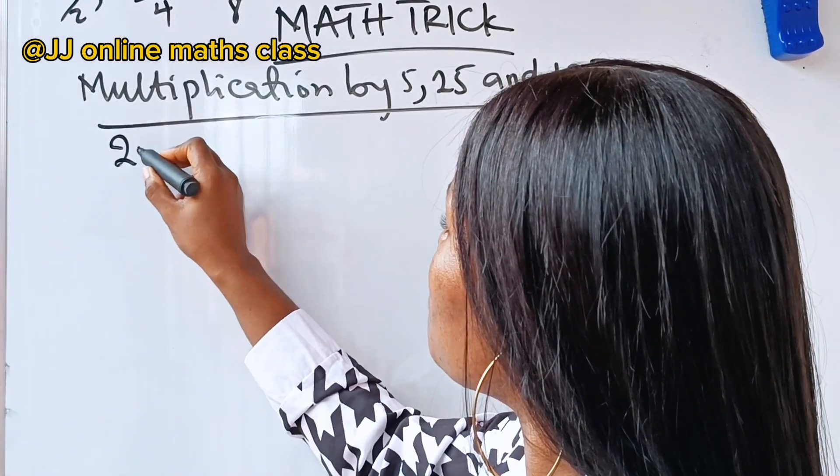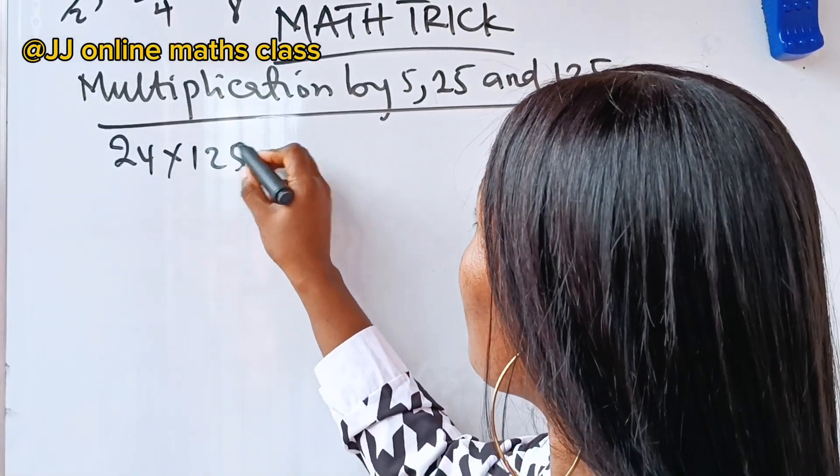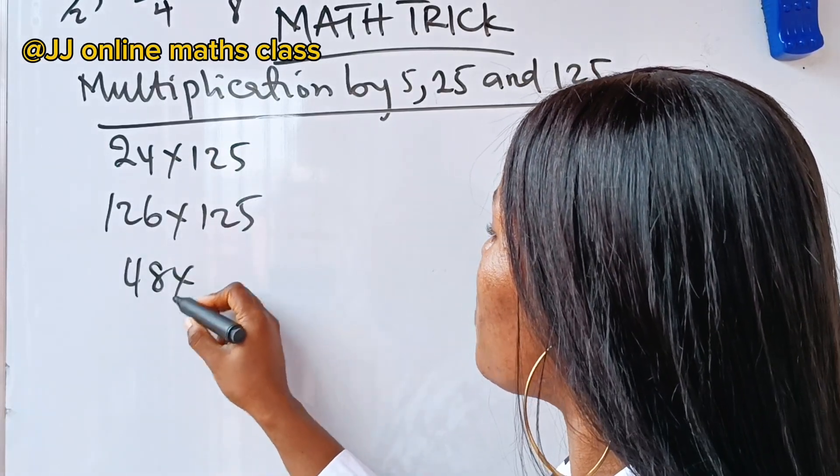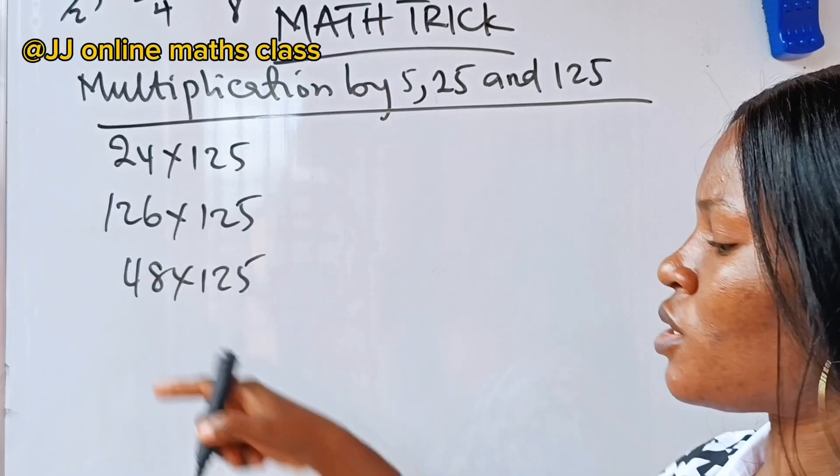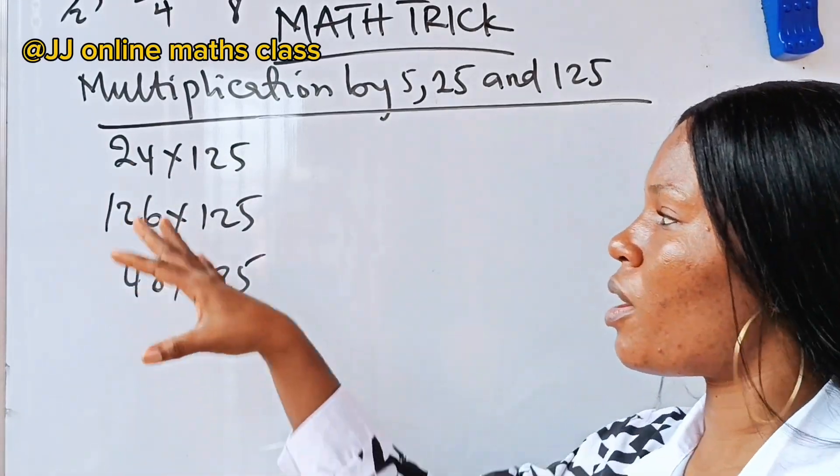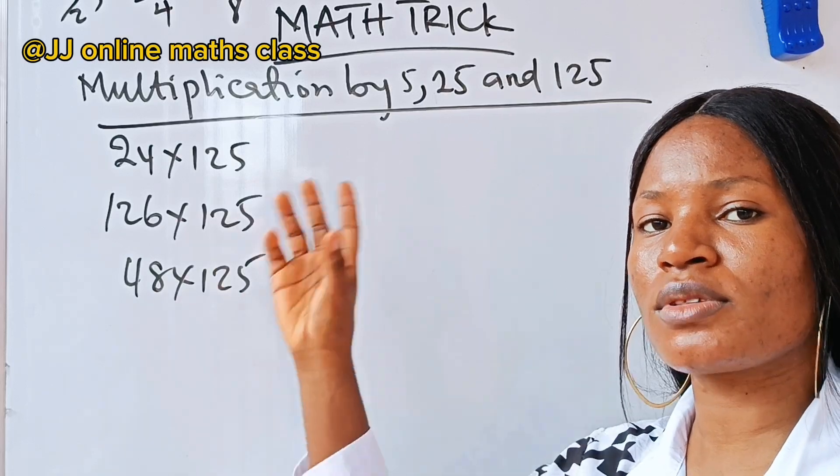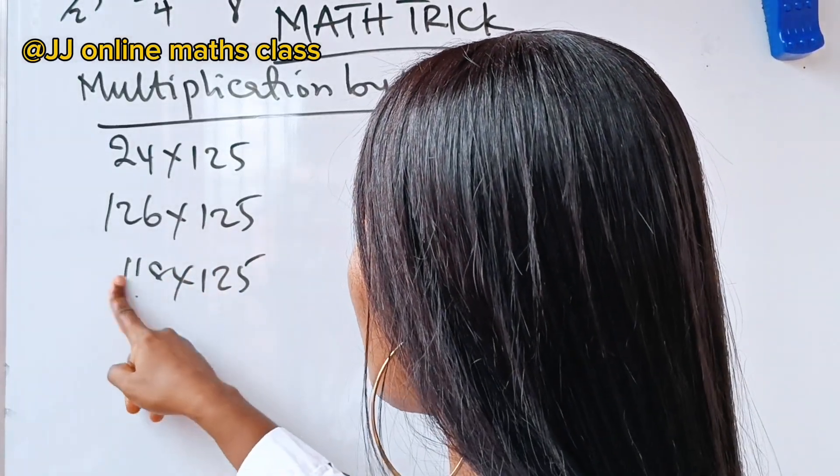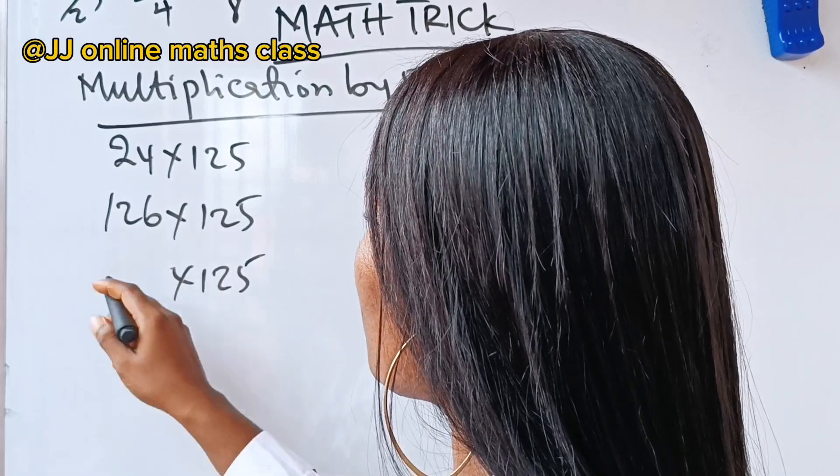So, we have 24 multiplied by 125, 126 multiplied by 125, 48 multiplied by 125. For the fact that these are even, doesn't mean you cannot use odds. When I was selecting this, I did not even consider the odd one. But you can use odds here. Instead of 48, let's use 43. 43 multiplied by 125.